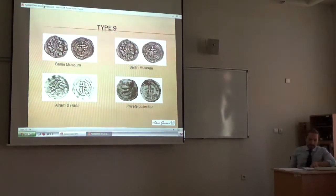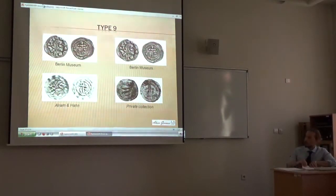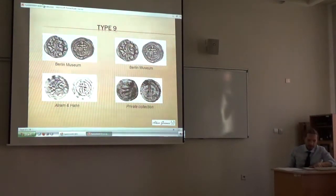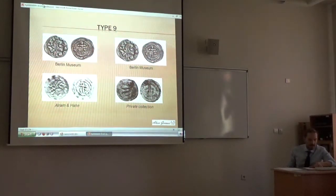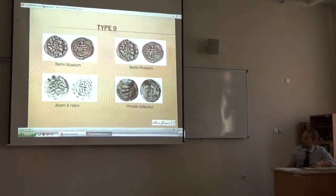Type 9 is represented by a quarter siliqua often assigned to Cunimund, with an epigraphic reverse. As with Type 3, we must divide Type 9 into two parts. In this slide you can see two coins from the Berlin Museum — one coin published by Metlich, one coin published by Alamanni-Han — and a new specimen found in Hungary, this one from a private collection. All these obverses are in the name of Justin; for some authors Justin II, in my opinion Justin I.